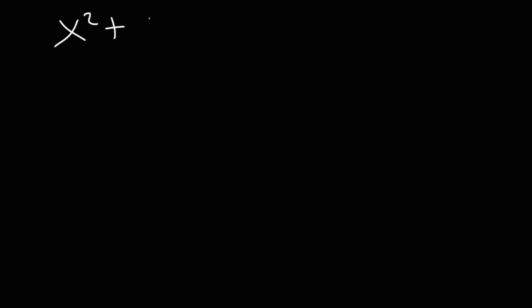For the sake of practice, let's try another example. Try this one: x squared plus 7x plus 12 is equal to 0. So feel free to pause the video and, using the same process that we used in the last example, go ahead and try this problem.